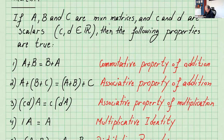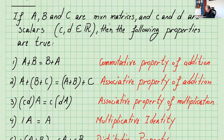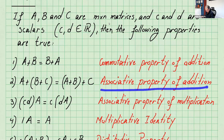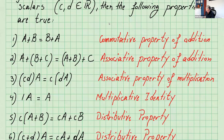This first property is only for addition: A plus B equals B plus A — that's the commutative property of addition. A plus (B plus C) equals (A plus B) plus C — that's the associative property of addition. And (c times d) times A equals c times (d times A) — that's the associative property of multiplication for scalar multiplication.